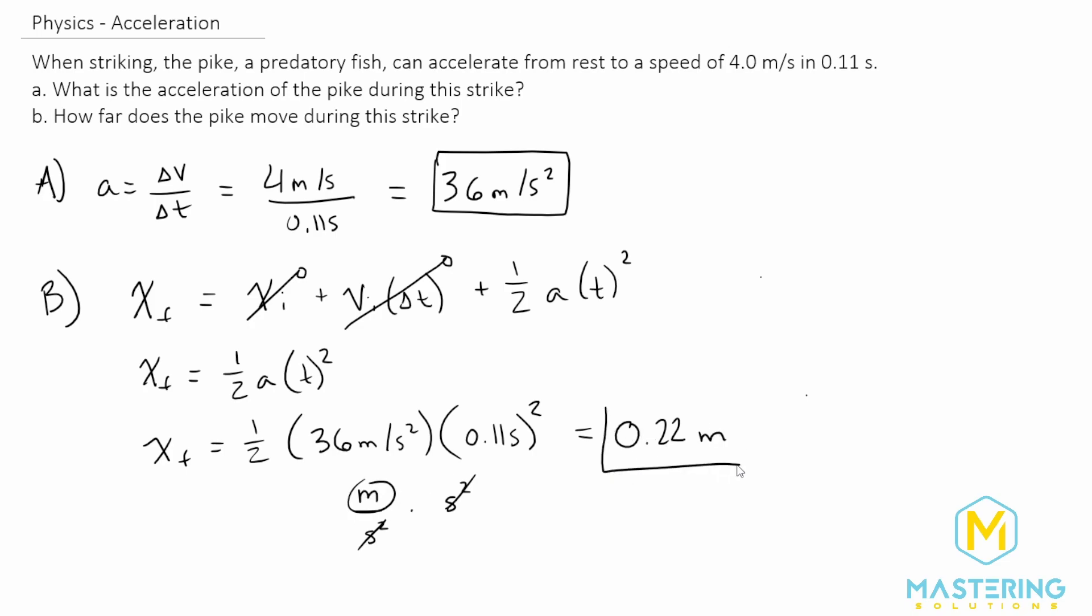So here is the distance that the pike, a predatory fish, moves in this problem during the strike: 0.22 meters.